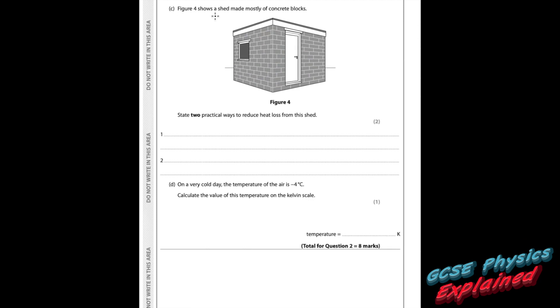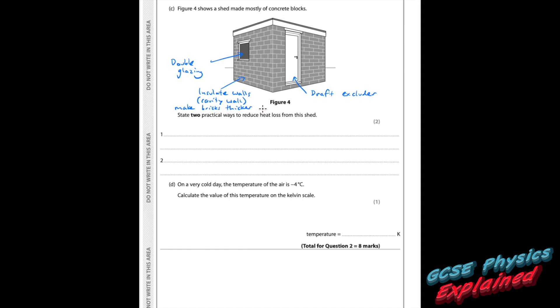Question C. Figure 4 shows a shed made mostly of concrete blocks. State two practical ways to reduce heat loss from this shed. It's got a door, so use a draught excluder. It's got a window, so use double glazing. It's got walls, so use insulation in the walls — you could have a cavity wall, for example, or make the bricks thicker, which would decrease the thermal conductivity.